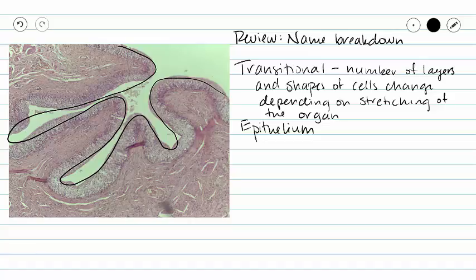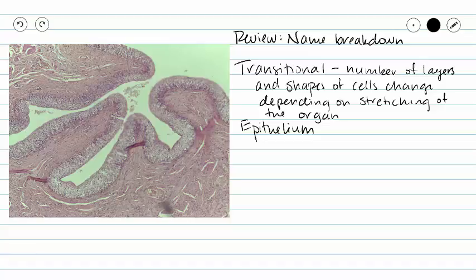If it were stretched, then we would see our tissue all in one smooth line. Epithelium means that we are bordering an internal space in this case.